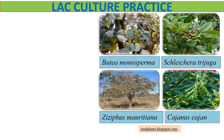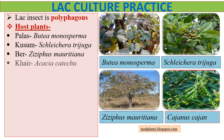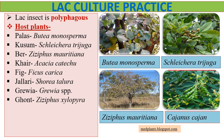Next comes lac culture practice. Culture of lac insect for commercial purpose is known as lac culture. This involves proper care of host plants, regular pruning of host plants, propagation, collection and processing of lac. Lac insect is polyphagous, meaning its feeding is not restricted to one particular plant but it can survive on many host plants. Some of the important host plants are Butea monosperma, Sclerodera trejuna and Ziziphus mauritiana. Lac obtained from Sclerodera trejuna is considered as superior resin in comparison to others.